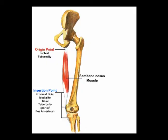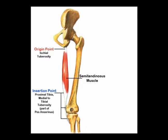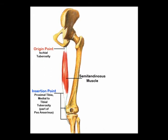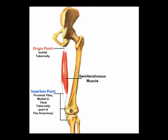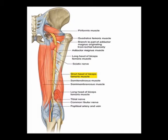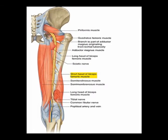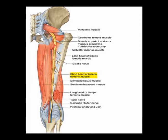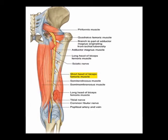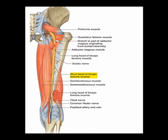The semitendinosus muscle originates on the ischial tuberosity and it inserts onto the pes anserine on the superior medial tibia. The innervation of the semitendinosus muscle is the tibial nerve, which is a branch of the sciatic nerve from vertebral levels L5, S1, and S2.